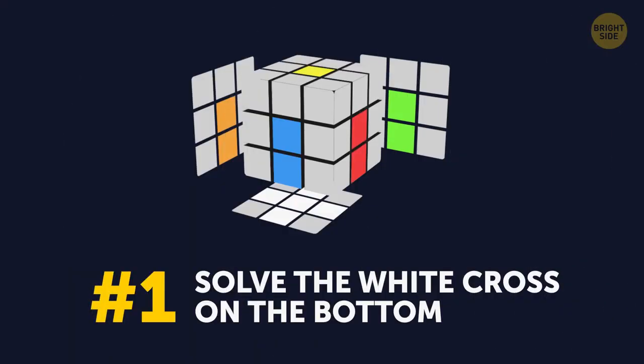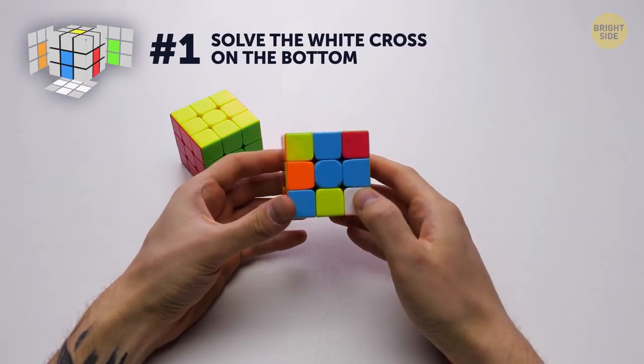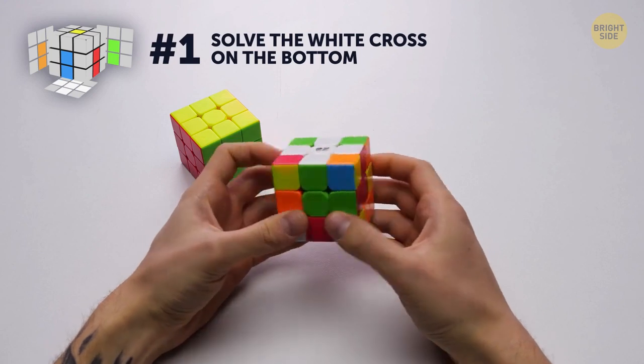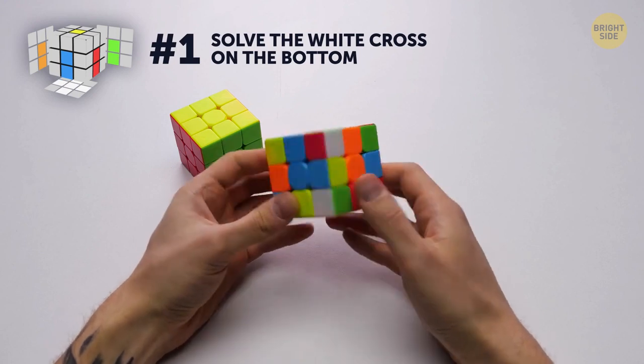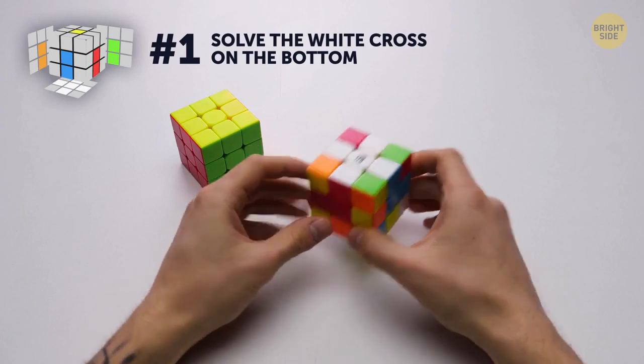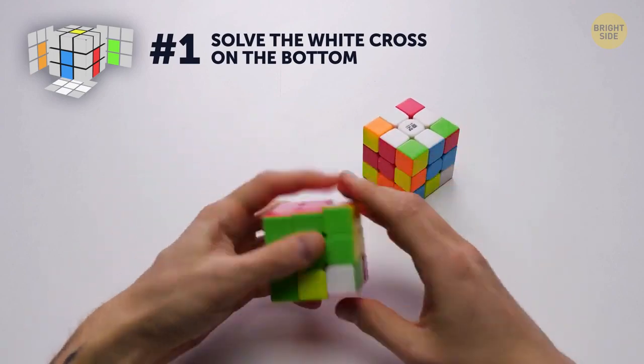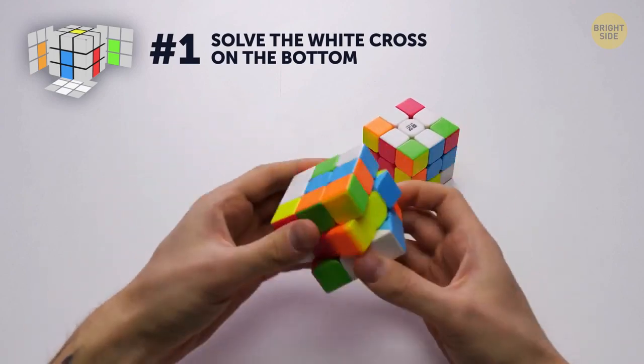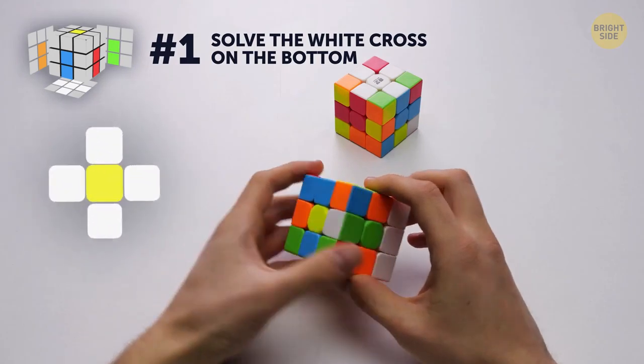Number 1. Solve the white cross on the bottom. The task here is to put together a white cross and align its edges with the right-colored center on each side. Here, I'll mix it all up first. Now, let's get started.